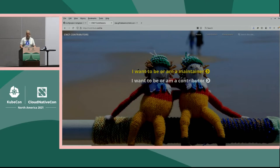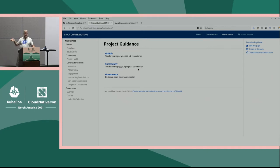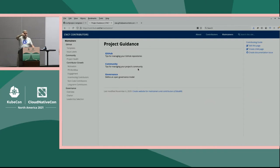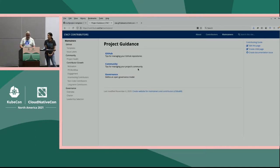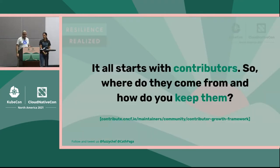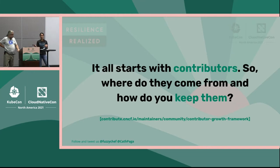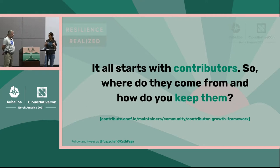The website immediately branches off into two sections, and what you want is the section that says 'I am, or want to be, a maintainer.' There you can find a whole bunch of guides and advice on doing various things and running your project, including setting up governance, how to monitor health of your project, and what we're talking about today — how to foster contributor growth. You'll find the contributor growth strategy framework there, which is a very high-level overview of things to keep in mind to grow your contributor base. A lot of these things sound like common sense, but it's really important to spell them out.